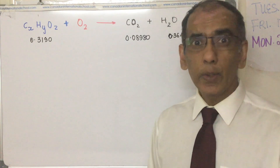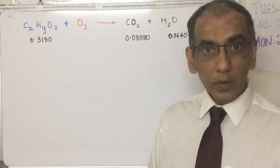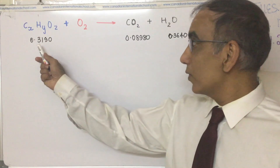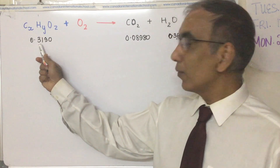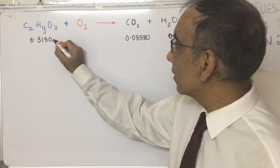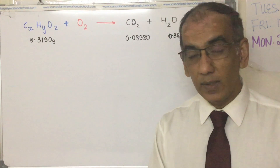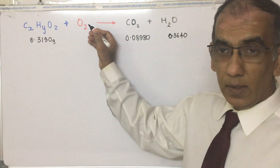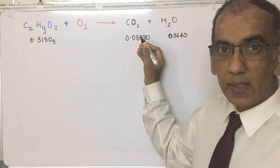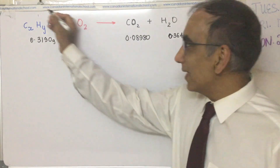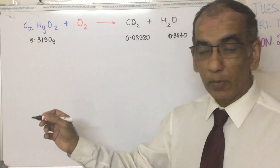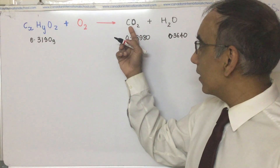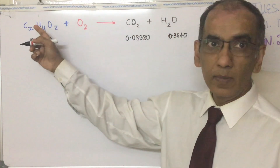Let's break the question down one step at a time. We know that menthol contains carbon, hydrogen, and oxygen, and we're given that the mass of the menthol is 0.3190 grams. All of the menthol is completely combusted in oxygen, producing carbon dioxide and water. Because all of the matter in the menthol has to go somewhere — into the products — we can assume that all of the carbon and hydrogen here has come from the menthol.